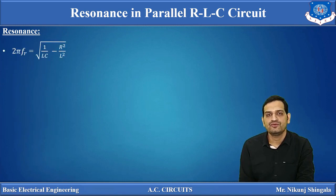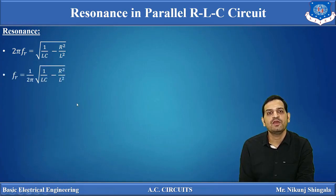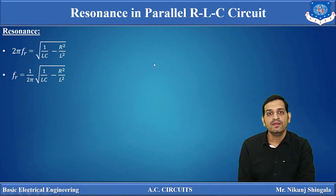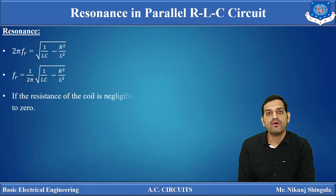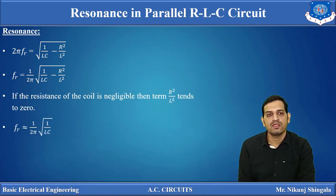Taking the square root of both sides, ωR = √(1/(LC) − R²/L²). Since ωR = 2πFR, we get 2πFR = √(1/(LC) − R²/L²). So the final expression for resonance frequency of a parallel RLC circuit is FR = (1 / 2π) × √(1/(LC) − R²/L²). If we assume the inductive coil has negligible resistance, then R²/L² tends to 0, and the expression simplifies to FR = 1 / (2π√(LC)) — the same expression as for series resonance.